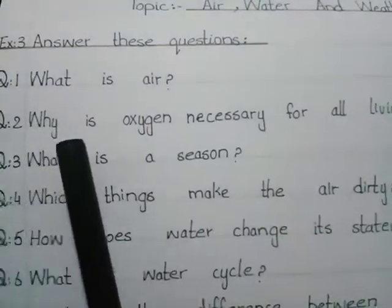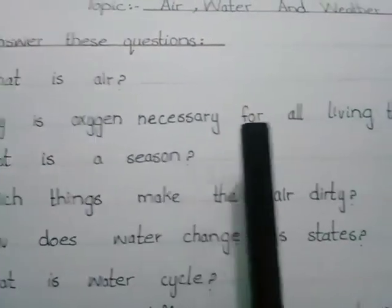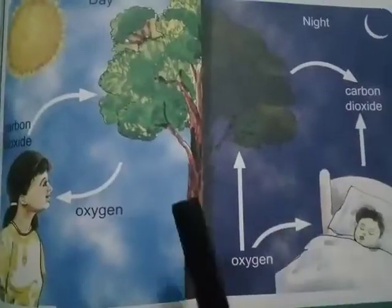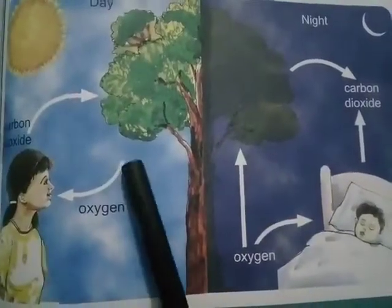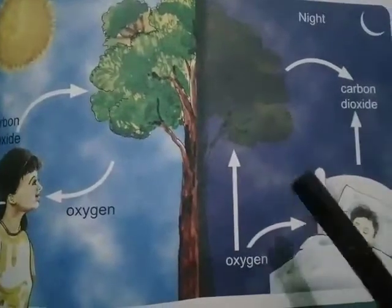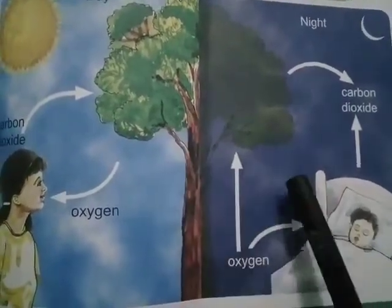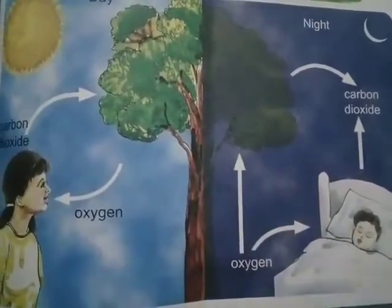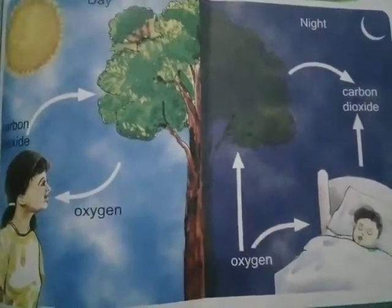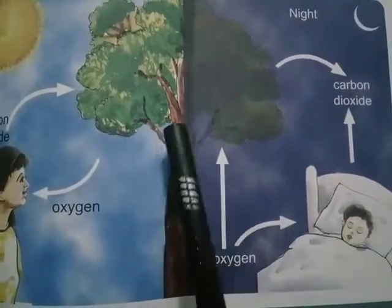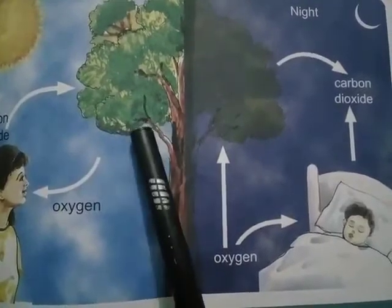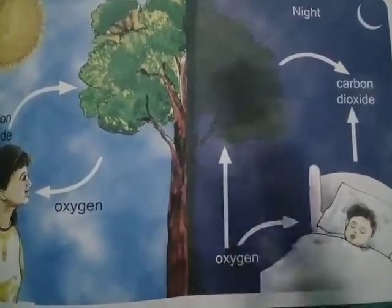Question number 2 is: why is oxygen necessary for all living things? Oxygen is necessary for all living things. All animals and plants breathe in oxygen to stay alive. We get oxygen from plants, and plants make this oxygen in the process of photosynthesis.